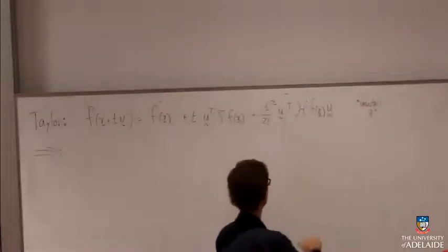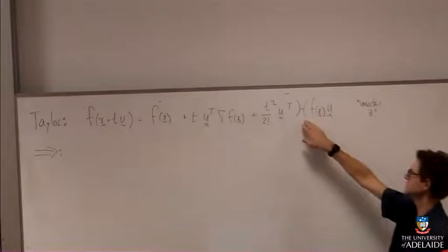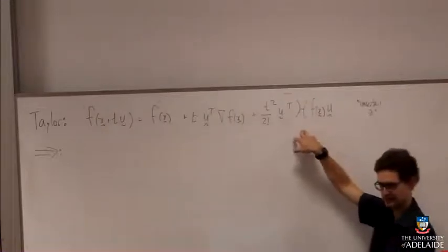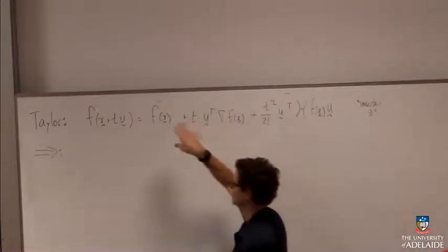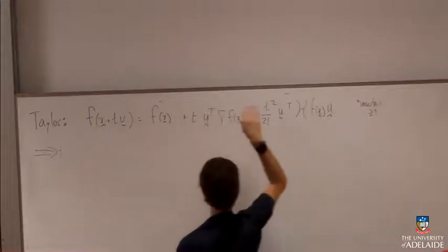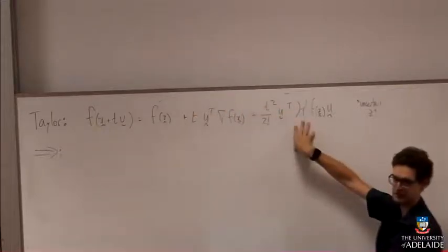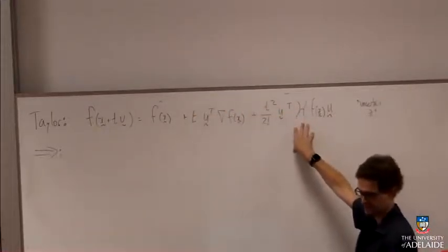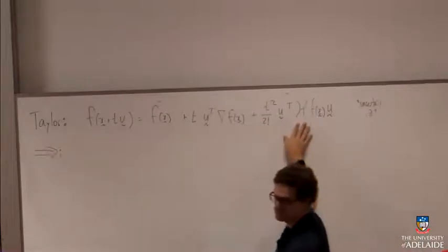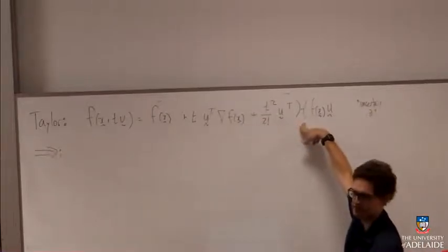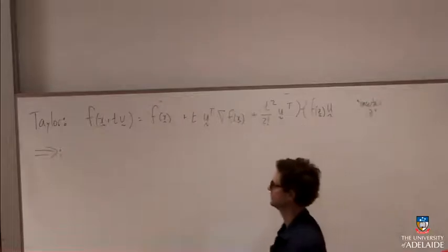So, okay, why have I done this? Well, it's because I want to say something about the Hessian, right? Like I'm trying to use the fact that my function is convex to prove something about the Hessian, that the Hessian of this function is positive definite. So this is a good place, a good way to introduce the Hessian into some analysis of my function.